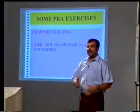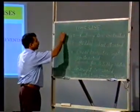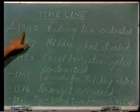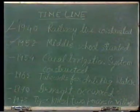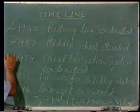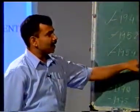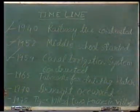Next we come to the timeline or historical events recording. This is an important exercise in which we try to record different events related to the village or village life. The communication system was started in 1940, which gives us ideas about how people benefited from railway line construction. In 1952, the first middle school started, indicating the educational system in the village. In 1954, other infrastructure facilities like canal irrigation systems were developed, so we can assess the development process at different stages.